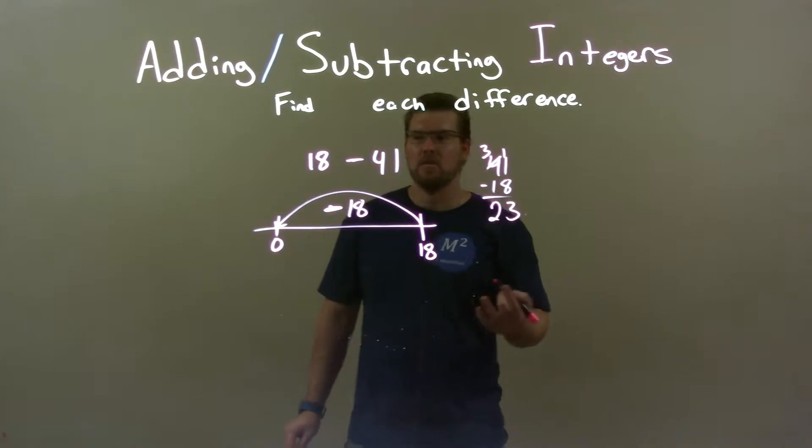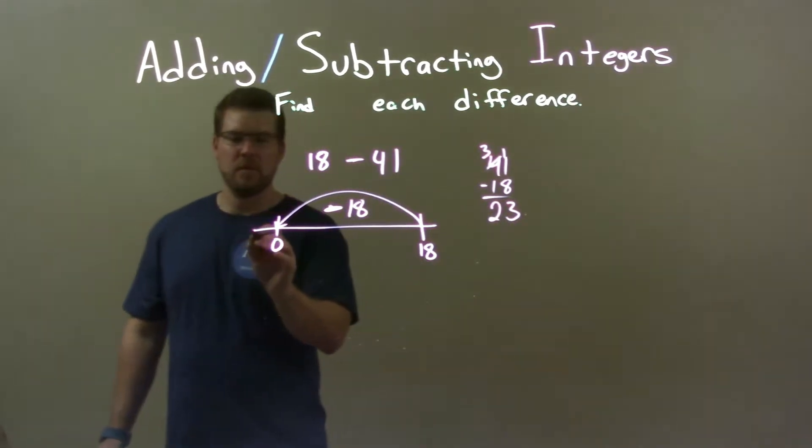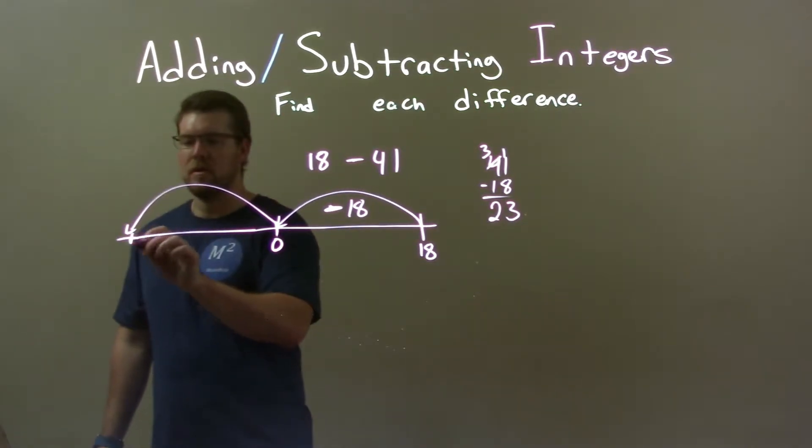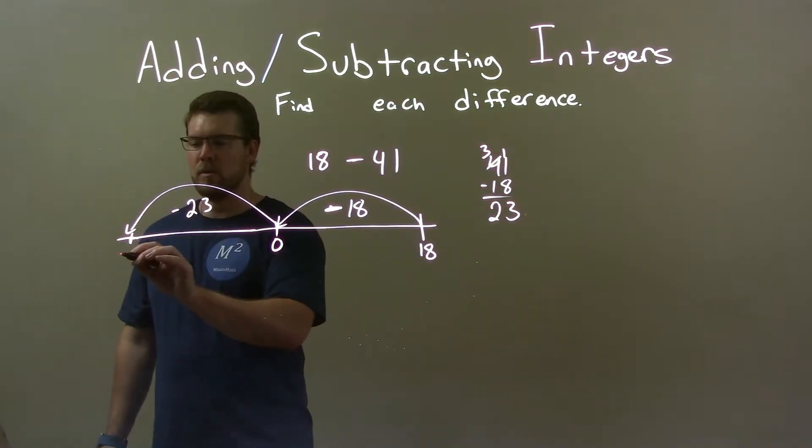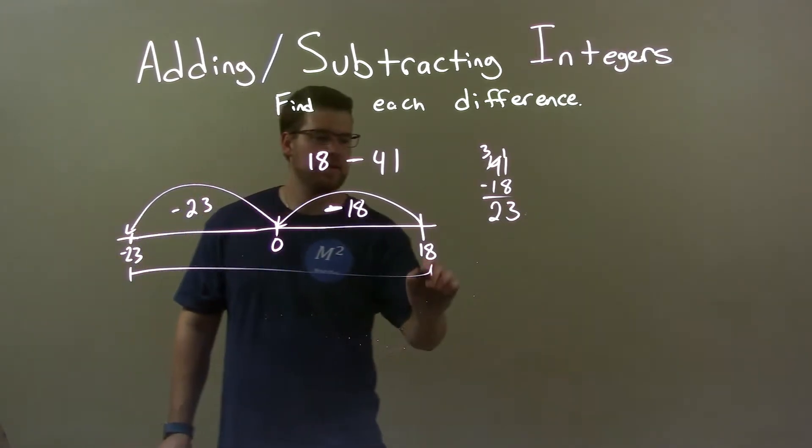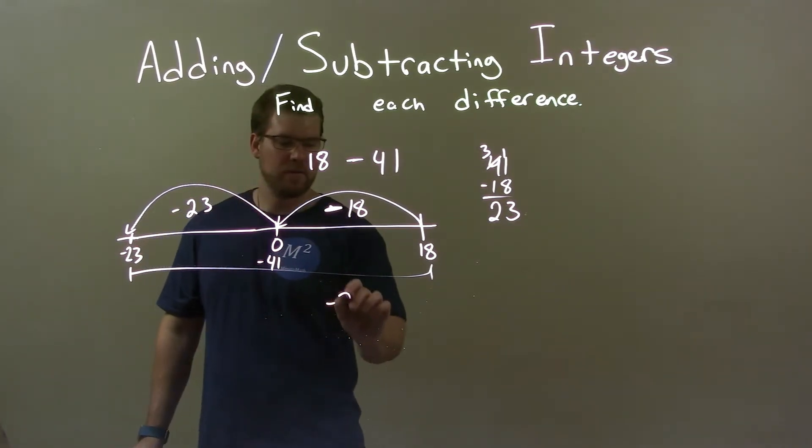So, now we have 23 more units we need to move to the left. Well, that one's easy to see from 0. We go 23 more units and we're at negative 23. So, overall, we've traveled a distance of negative 41, but our final answer is just negative 23.